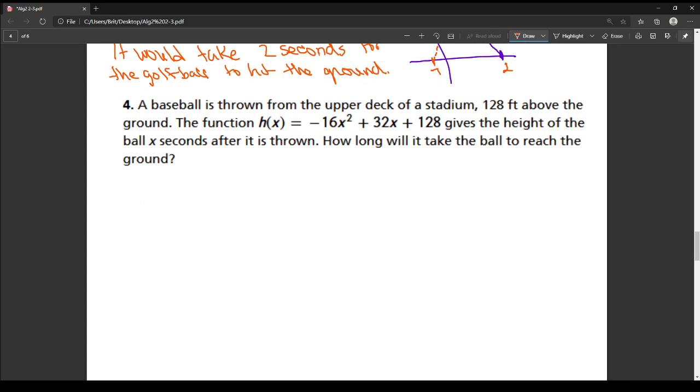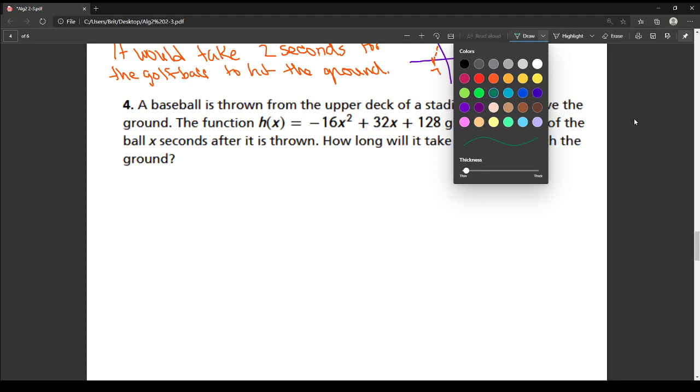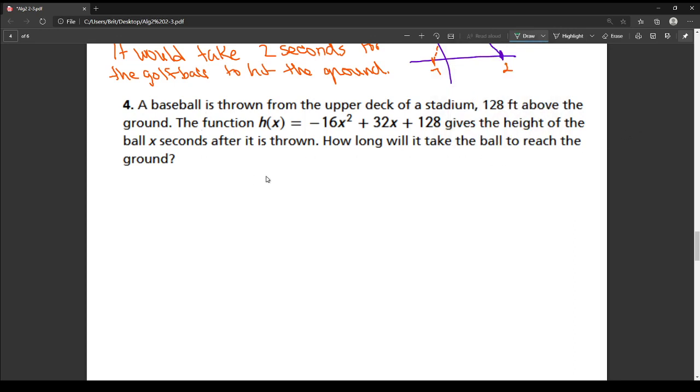Let's try another example of parabolic motion. And this one's with baseball. So for some reason, people in the upper deck of the stadium are throwing a baseball back down. Now they're 128 feet above the ground, so this is a really, a nicely sized baseball stadium, I would say. So we have this function, 0 equals negative 16x squared plus 32x plus 128.